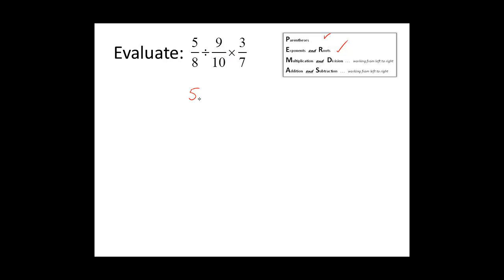When we divide, we keep the first fraction, we change the operation to multiplication, and then we flip, or take the reciprocal of, the second fraction. I'm focusing on these two fractions and I'm going to now multiply. I have a common factor of two in the numerator and denominator with the eight and the ten, so we will divide by two. Eight divided by two is equal to four, and ten divided by two is equal to five. Now we will multiply these numerators together: five times five is equal to 25, and four times nine is equal to 36.